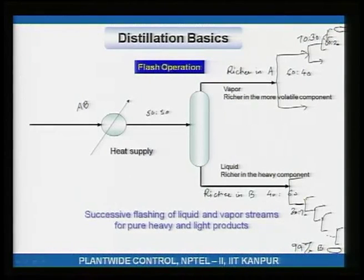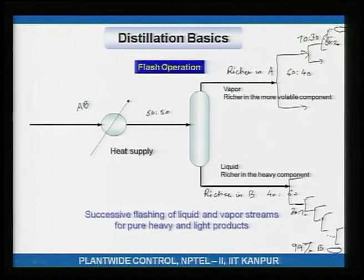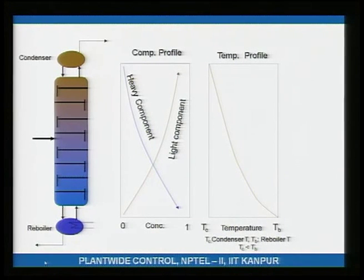In distillation, we are performing successive flashes. Because of those successive flashes, we end up getting nearly pure A and nearly pure B. In a column, instead of separate flash tanks, we have a series of trays on which successive flashing of liquid and vapor occurs.